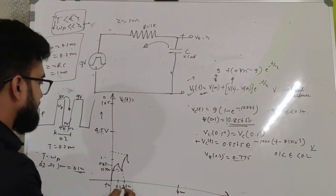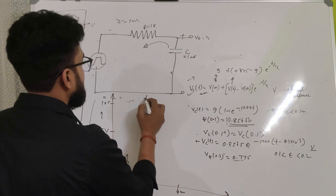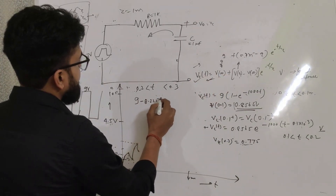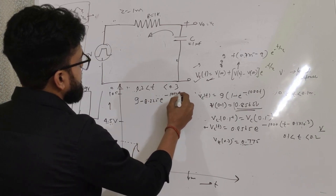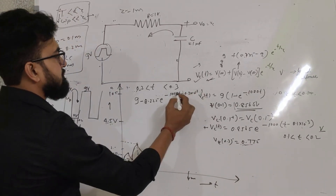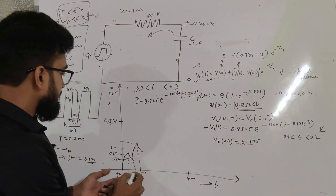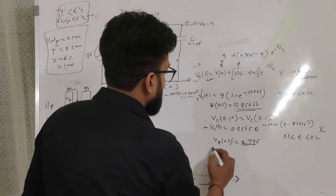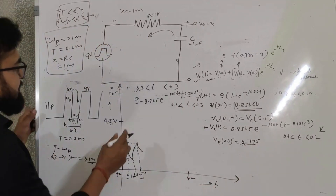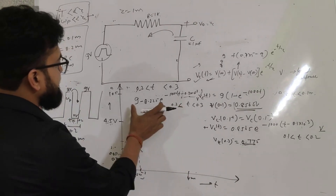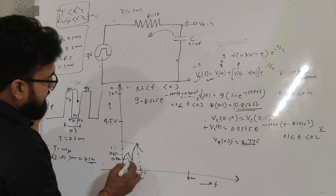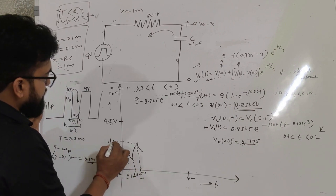This charging equation is valid for T greater than 0.2ms and less than 0.3ms, giving: Vc(T) = 9 − 8.225 × e^(−1000 × (T − 0.2ms)). Evaluating at T = 0.3ms gives Vc(0.3) ≈ 1.558 volts. So in the second pulse, the capacitor charges up to 1.558 volts, which is higher than the first pulse peak of 0.8565 volts.